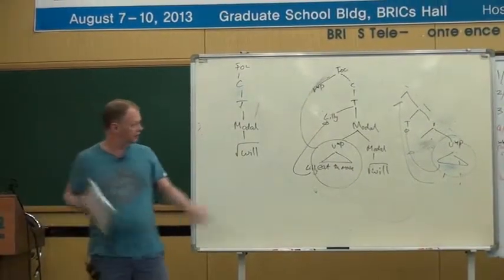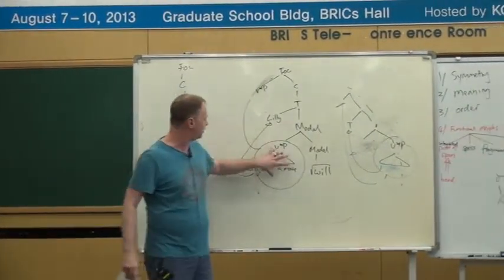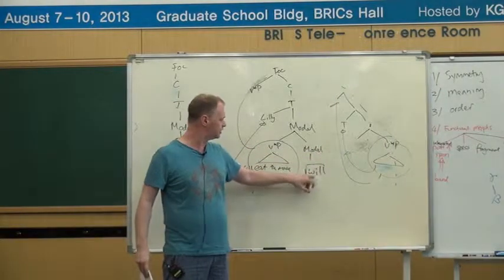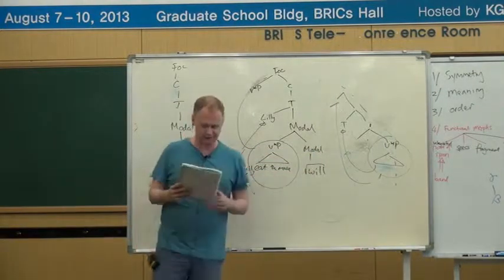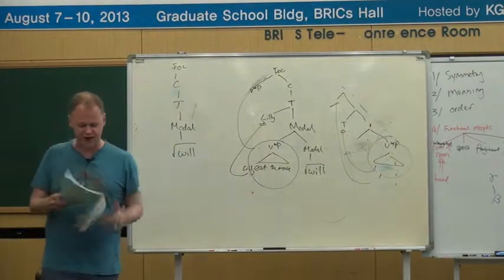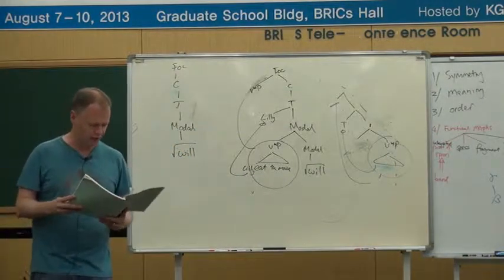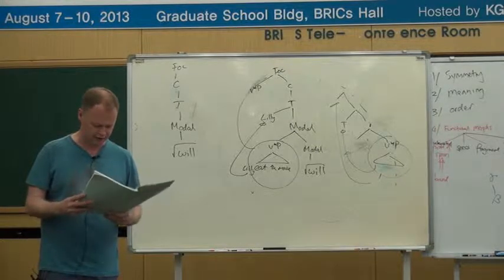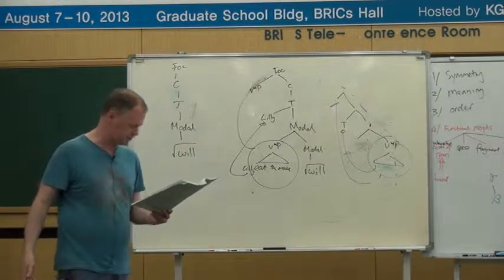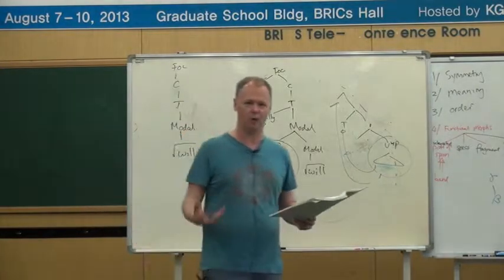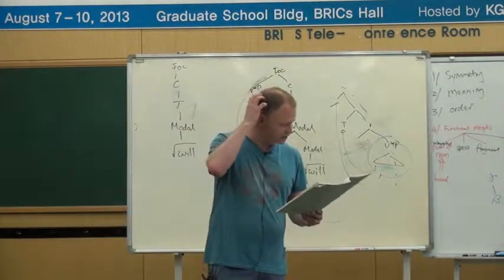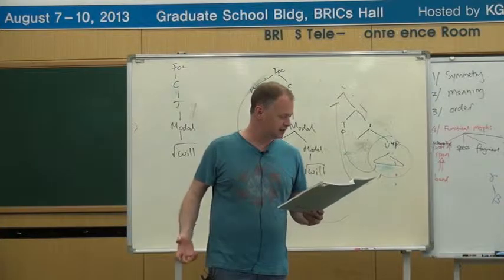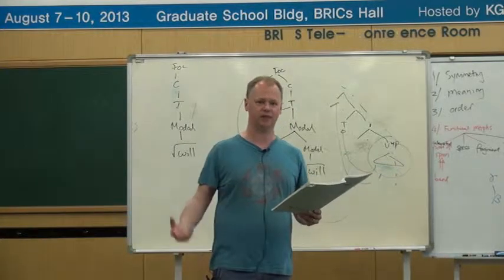We're going to come back to these funny structures where we've got a verbal specifier of some kind of rooted category. But before I do that, I'm just going to very quickly run through how highest semantic interpretation works. Have a look at example 58 — that's how highest semantic interpretation works in my system.